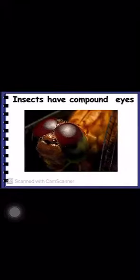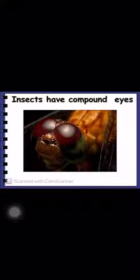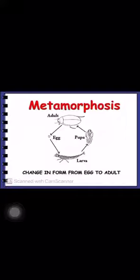Insects have compound eyes, which are made up of a number of ommatidia. In the development of insects there is metamorphosis, which means that the egg develops into a young form, then there is molting, and it develops into an adult.